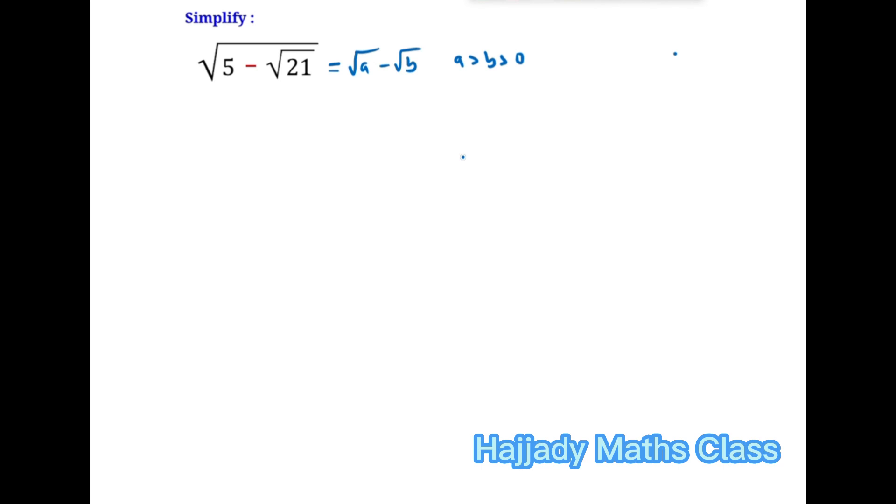So the next thing for us to do is to square both sides. Squaring both sides, we're going to have 5 - √21 = (√A - √B)². So here I'm going to have 5 - √21 = A - 2√AB + B.